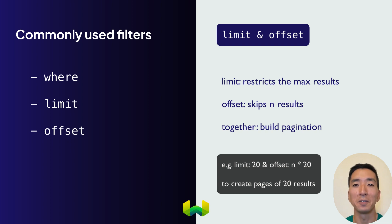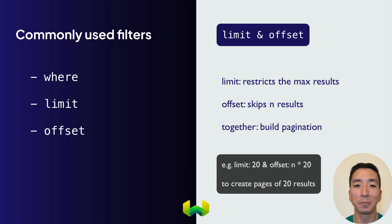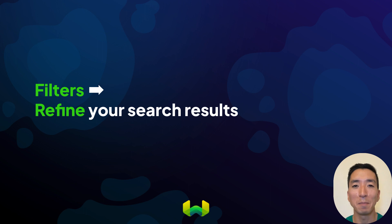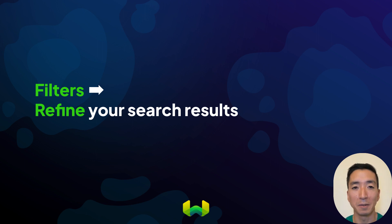So the first page would have an offset of 0, the second page would have an offset of 20, and so on and so forth. This is a common technique that will help you to prevent having to fetch all preceding results to create pagination. Filters are very powerful tools that can help you to refine your query results in Weaviate. They allow you to combine the flexibility of vector searches with the precision of boolean filters to only zero in on certain parts of your dataset that you're interested in. That's it for this section on filters in Weaviate. Thanks for watching, and we'll see you soon.